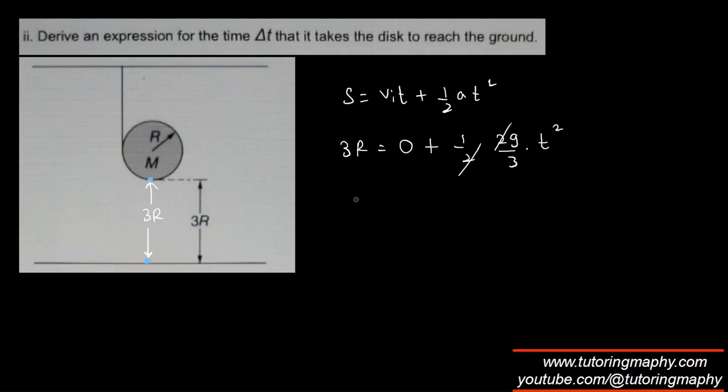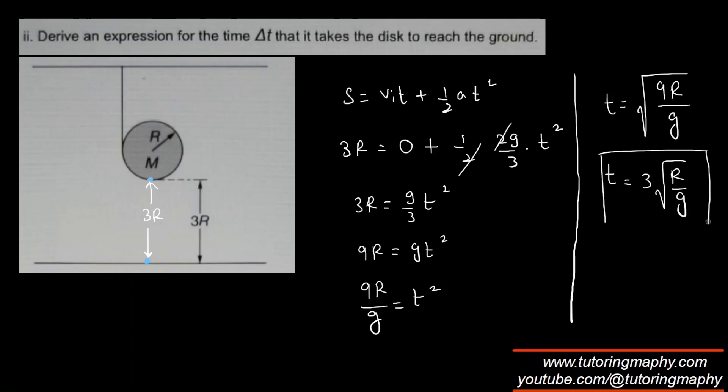So these two are gone. I'm going to put 3R equals G over 3 T square. Multiply 3 both sides, so 9R equals GT square. Divide both sides, 9R over G is T square. I'm going to take square root on both sides. So T equals square root of 9R over G. Square root of 9 is 3. So 3 root R over G. That should be the time.